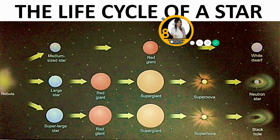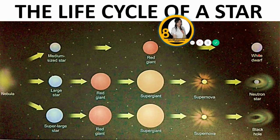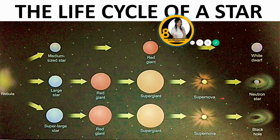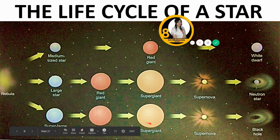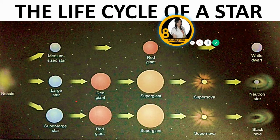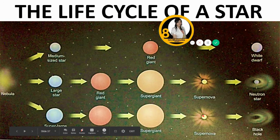This is the life cycle of a star. A medium-sized star will become a red giant, then a white dwarf. A large star will become a red giant, then a super giant, then a supernova, then a neutron star. A super large star will become a red giant, then a super giant, then a supernova, and finally a black hole.